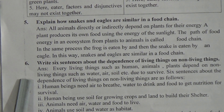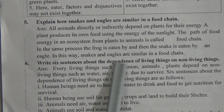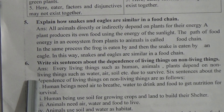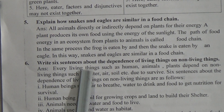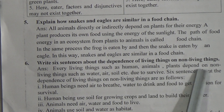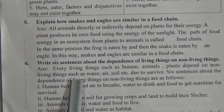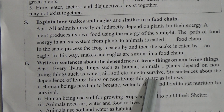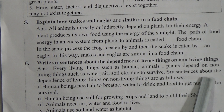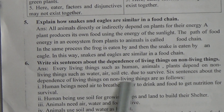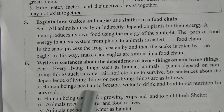Now CBQ number 6: Write six sentences about the dependence of living things on non-living things. Every living thing, such as humans, animals, and plants, depends on non-living things such as water, air, soil, etc. in order to survive. Six sentences about the dependence of living things on non-living things are as follows. Number one: Human beings need air to breathe, water to drink, and food to get nutrition for survival.